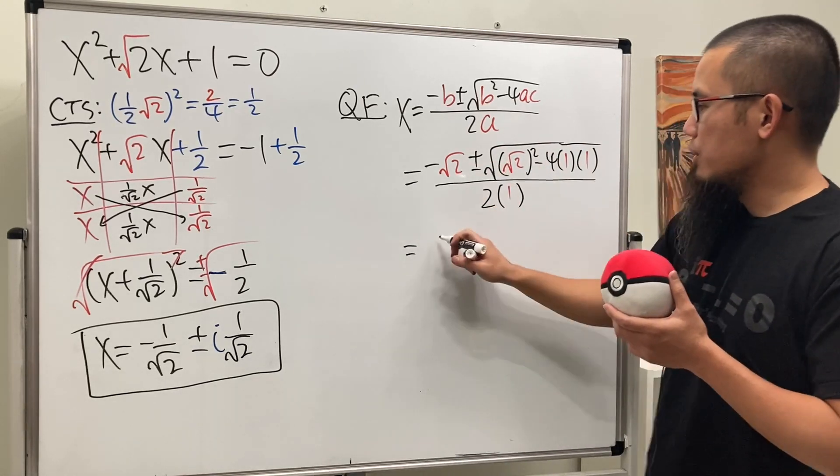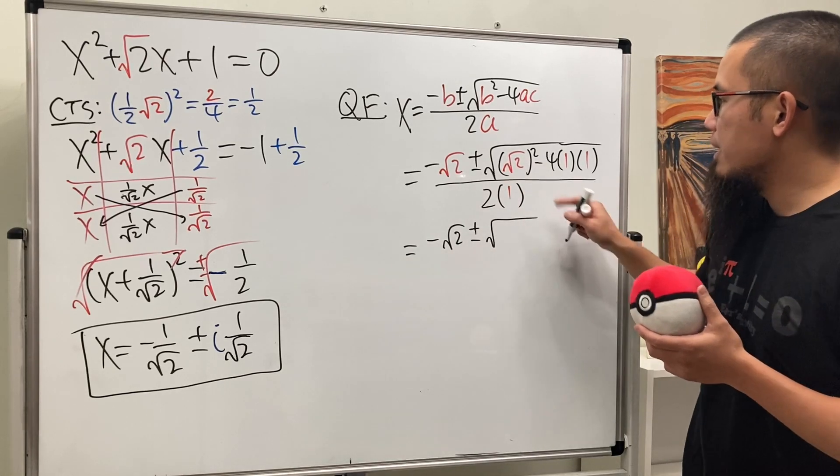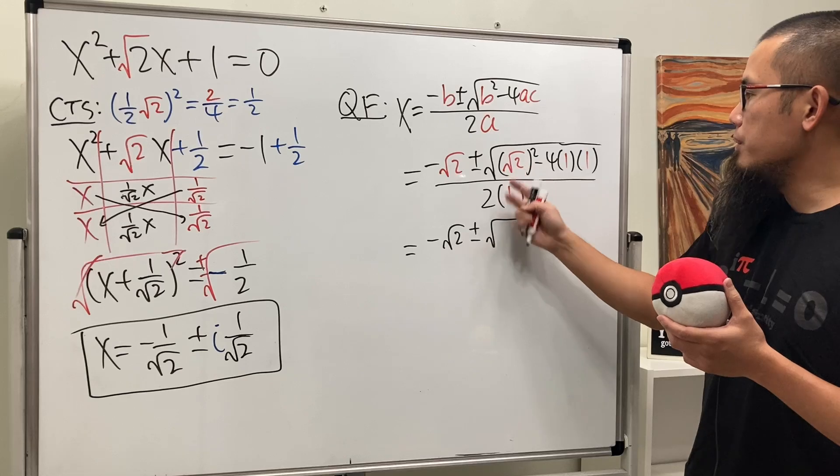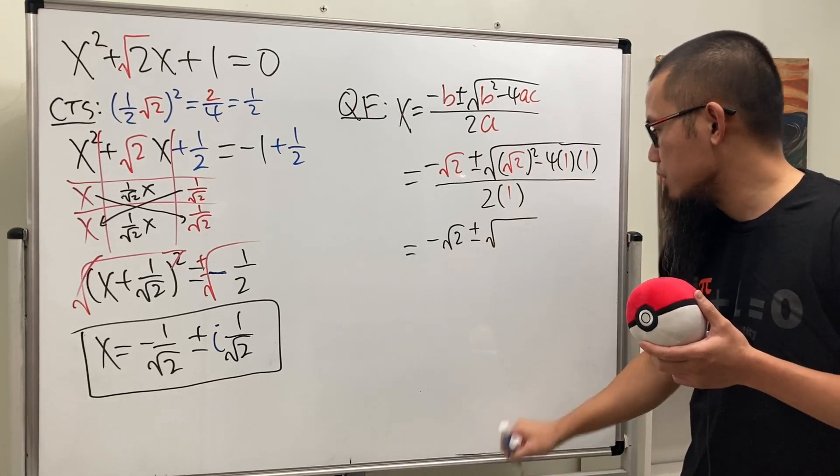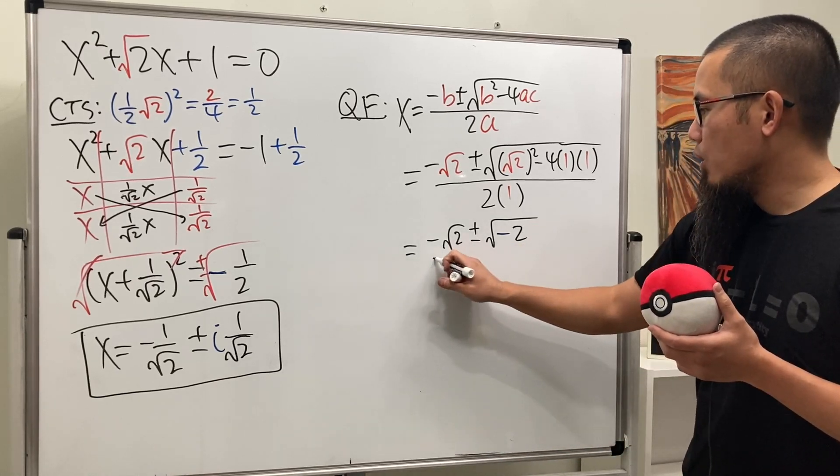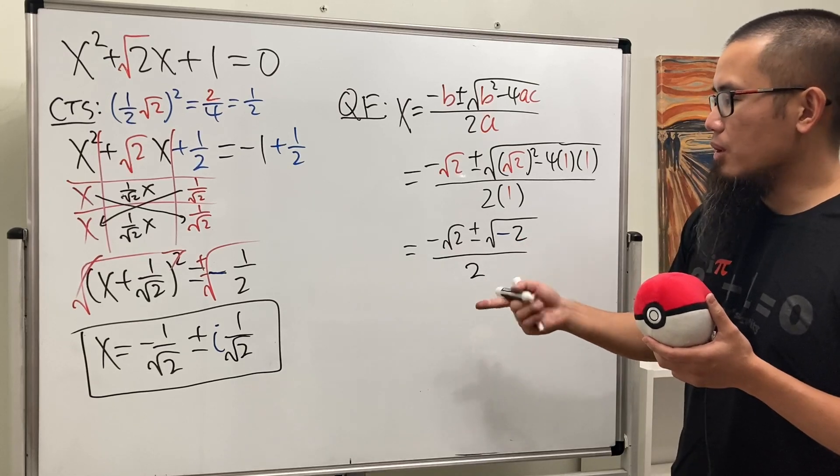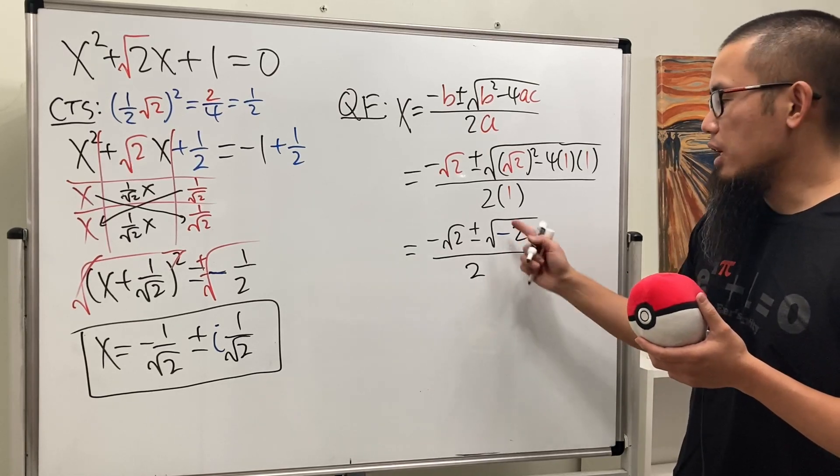All right. Now we see this is just negative square root of 2. And we have the plus or minus. Check this out. This is 2 minus 4, which is going to be negative 2. So negative. And then we have the 2 over 2. Same deal. We have the negative inside. So that becomes the i.